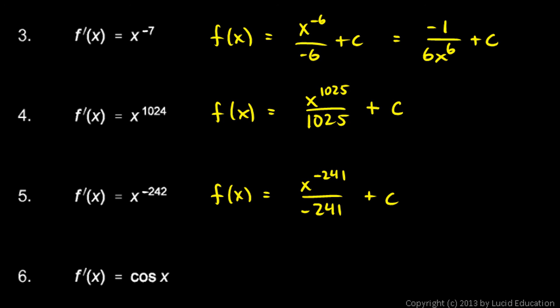Number 6, f prime of x is cosine x, so what function has cosine as its derivative? You should understand that that is the sine function. So f of x is sine x, plus c.